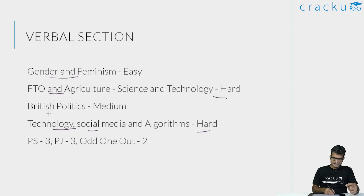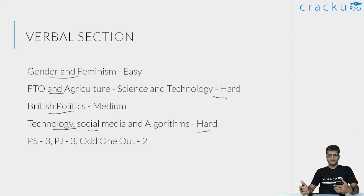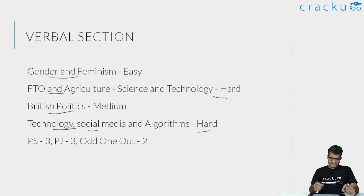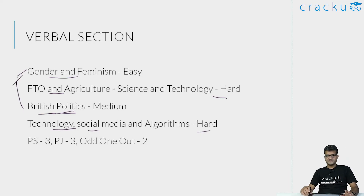There was one RC on British politics — about leaders in British politics — and it was slightly on the easier side. At least it was an easy read; I could go through the passage and understand what the author was conveying. But I missed some questions because they were actually pretty good and I didn't read one of the paragraphs very well, which affected my understanding. I think I didn't get one or two questions correct because of that, but otherwise I felt this passage was not very difficult.